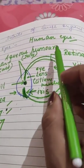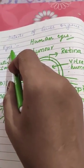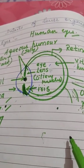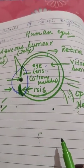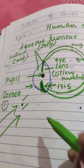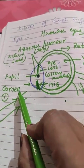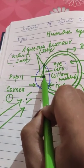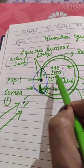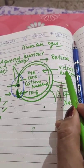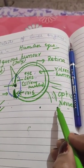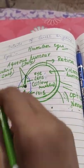Now let us understand the sense organs in detail. The first one is the eyes — the human eye. The human eye is one of the most valuable sense organs that enables us to see the world around us. The different parts of the eye are: cornea, pupil, iris, lens, retina, aqueous humor, vitreous humor, and optic nerves.